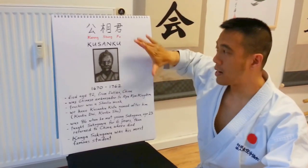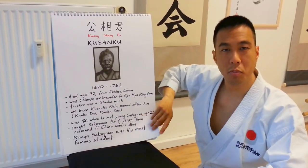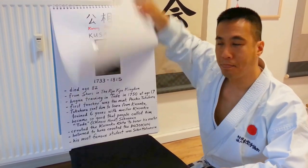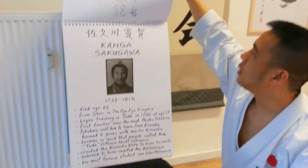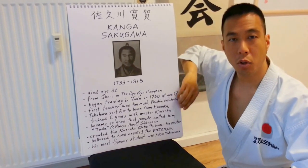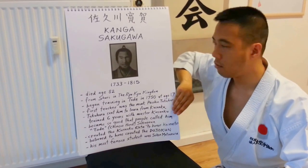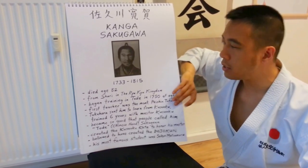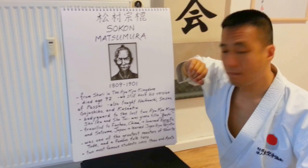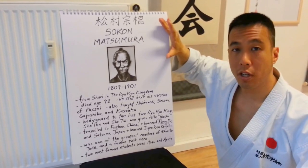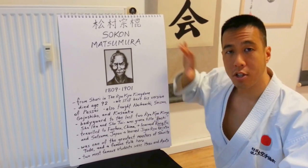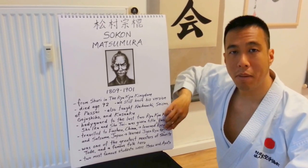It all originated with Master Kushanku, an ambassador from China sent to the Ryukyu Kingdom, modern-day Okinawa. One of his students, Kanga Sakugawa, a folk hero who defended the locals against invading Japanese military. One of his students was Sokon Matsumura. From the Matsumura line, we have direct kata, or forms that have been passed on to us, such as the Matsumura Basai.